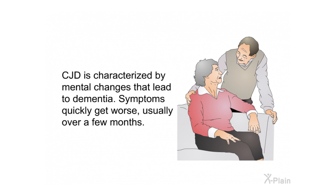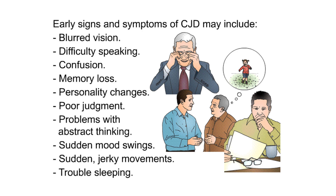CJD is characterized by mental changes that lead to dementia, with symptoms quickly worsening, usually over a few months. Early signs and symptoms may include blurred vision, difficulty speaking, confusion, memory loss, personality changes, poor judgment, problems with abstract thinking, sudden mood swings, sudden jerky movements, and trouble sleeping.